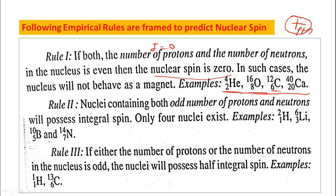Rule 2: nuclei containing both an odd number of protons and an odd number of neutrons will possess integral spin — that is, I equal to 1. For example, hydrogen-2 (deuterium) has 1 proton and 1 neutron — both odd — so it has integral spin. Such nuclei may be NMR active and show NMR spectra. Similarly, lithium-6 has 3 protons and 3 neutrons — odd numbers — so it also follows Rule 2.